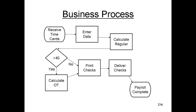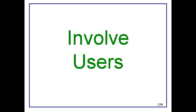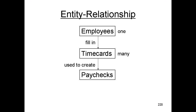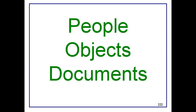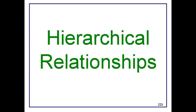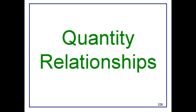This is a simple business process map for paying people. A process map has a trigger at the beginning, then you have steps and decisions, and finally you have an endpoint. Creating this document is your first opportunity to involve the users and their managers in the project. Here is an entity relationship diagram — this document is essential for getting the structure of the database correct. When you do the process map, you will discover the people, objects, and documents that must be handled in the application. The ER diagram helps you organize all of those components, showing the hierarchical relationships, the dynamic relationships, and the quantity relationships.